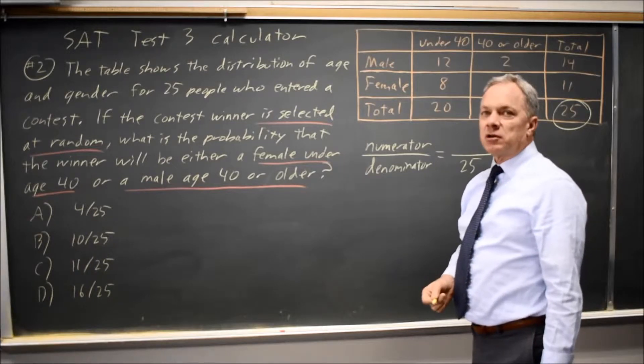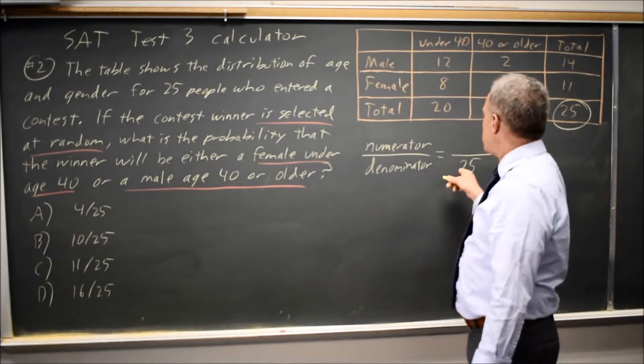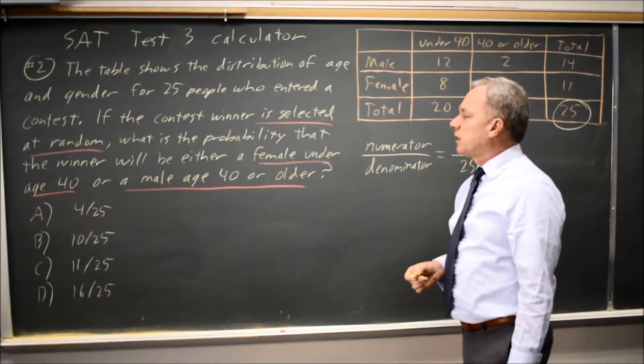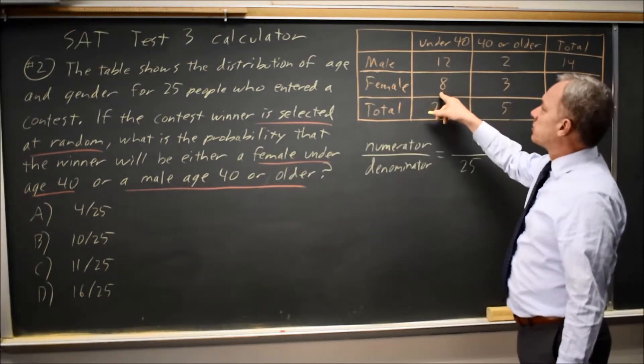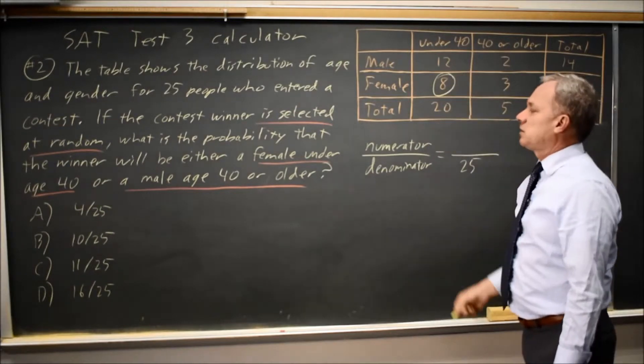Now we need to find the numerator. Of those individuals in the denominator, which in this case is everyone, how many are either female under 40, so that would be female and also the column for under 40, so that's these eight.